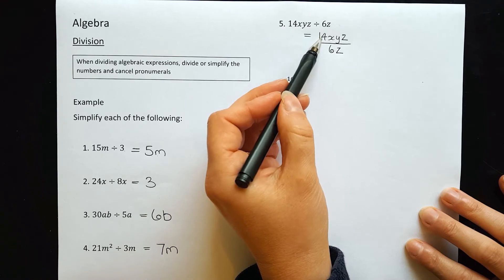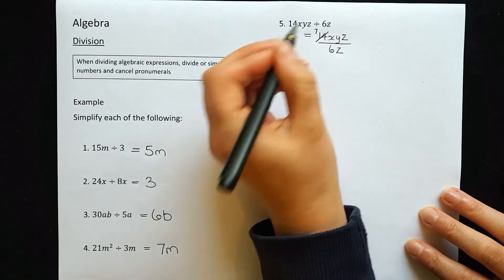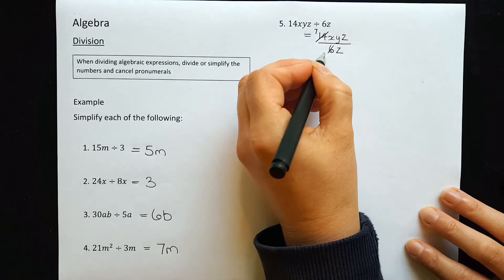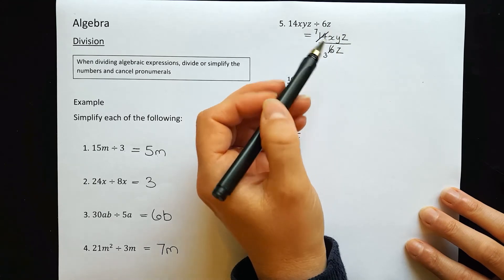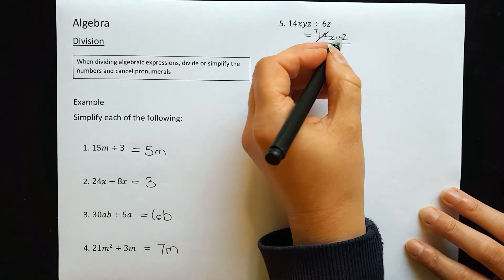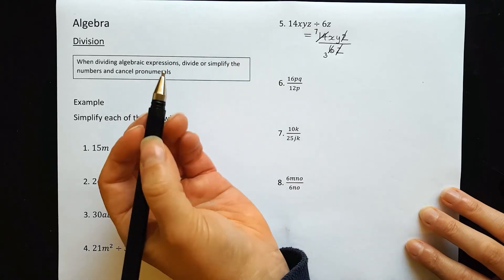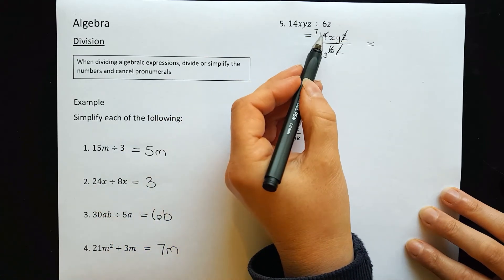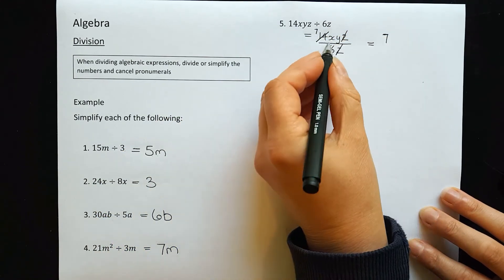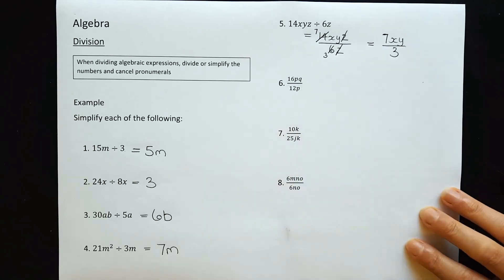For example, 14 and 6 can both be divided by 2. If I divide 14 by 2, I get 7, and 6 divided by 2 gives me 3. We also look for common letters on top and bottom. There's a z on top and bottom, so they cancel out. Once everything is simplified, write what's left: 7xy on top and 3 on the bottom. That's the most simplified answer.